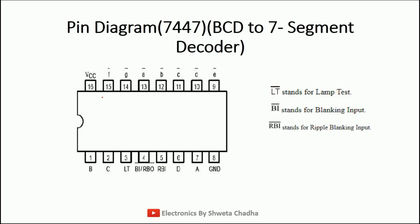The 7447 has a total of 16 PINs. The input pins are: B (which is QB), C (which is QC), D (which is QD), and A (which is QA). There is also ground, VCC, and the testing PINs: LT bar (lamp test), BI bar (blanking input), and RBI bar (ripple blanking input). These 3 pins — numbers 3, 4, and 5 — are used for the testing of the IC.